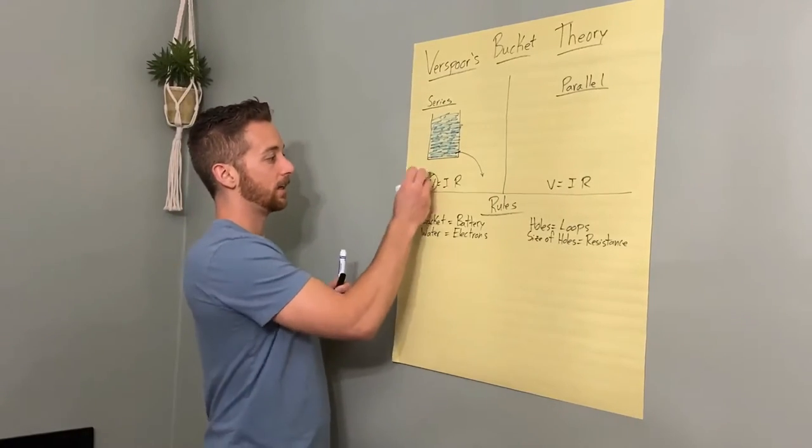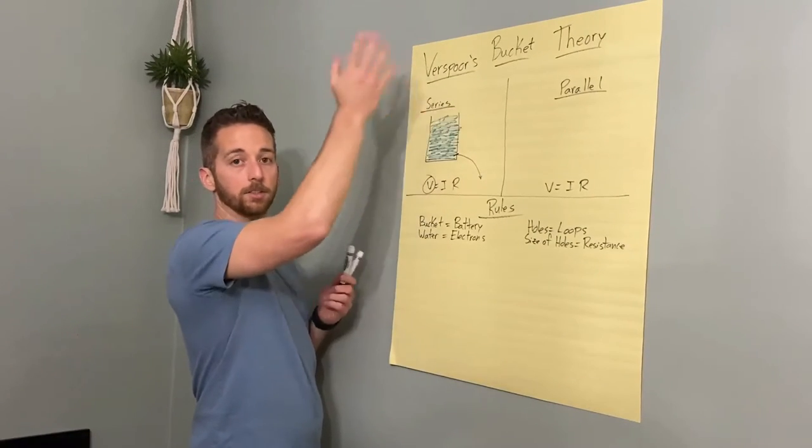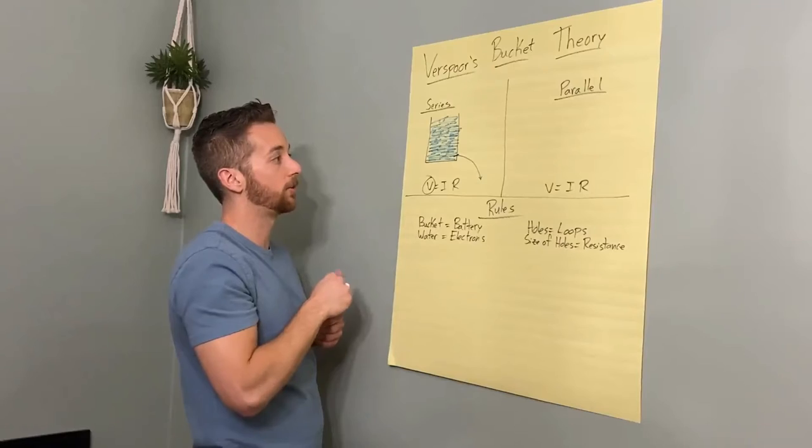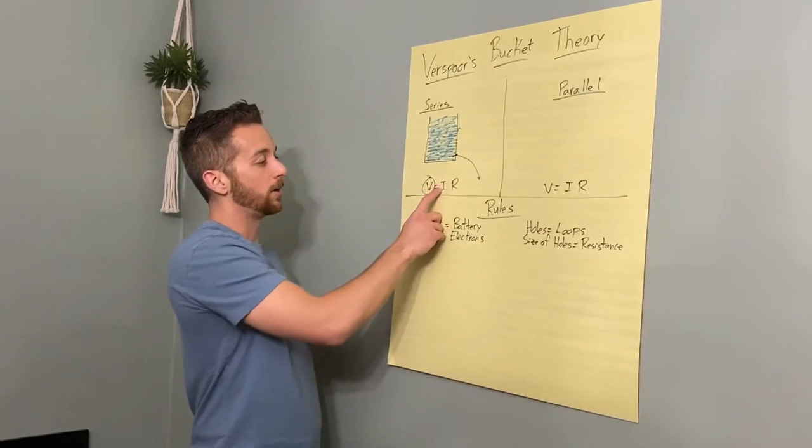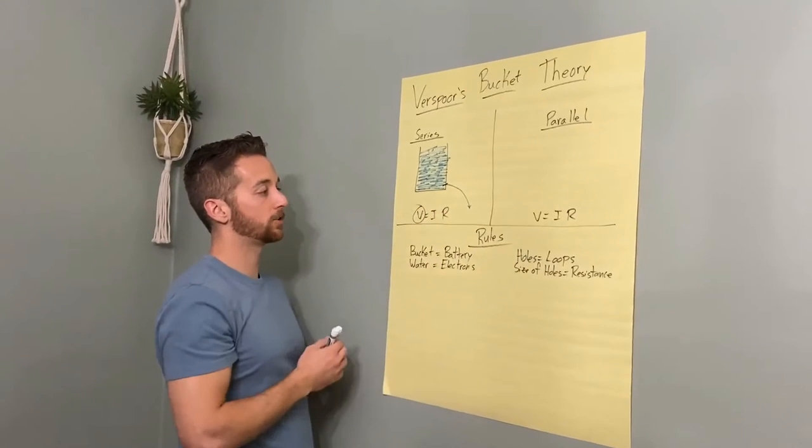You have a constant voltage here because the battery isn't changing. The battery is a nine volt, six volt battery, one and a half volt battery, whatever. Your current is determined by that. And there's your resistance.